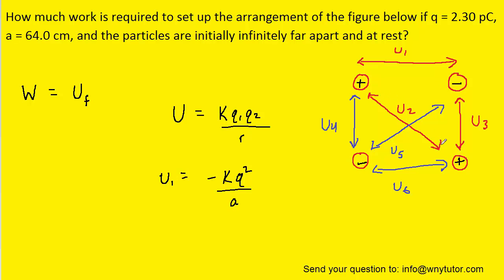For U2, we're going to have to find this diagonal distance right here, and because this is a square, we should know that the diagonal distance would be a radical two. So let's set up our expression for U2. We're multiplying a positive by a positive, so it should come out positive overall.